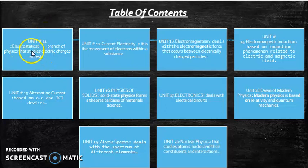Unit number 11 is electrostatics. In this chapter we will study the electric charges which are at rest. Unit 12 is current electricity, the movement of electrons within a substance. In unit number 13, electromagnetism, we study the electromagnetic force that occurs between electrically charged particles.